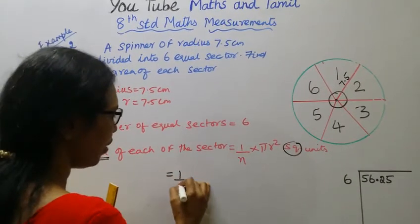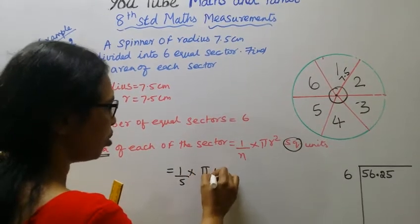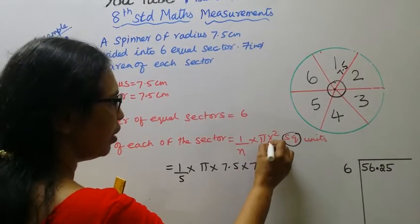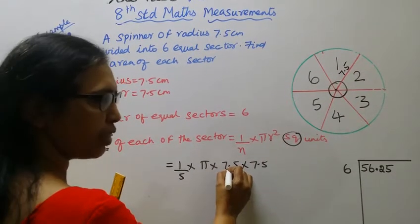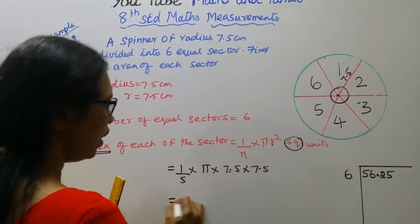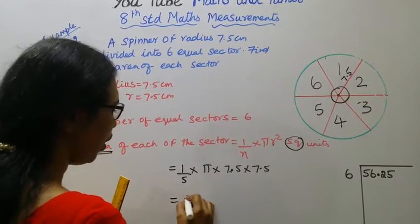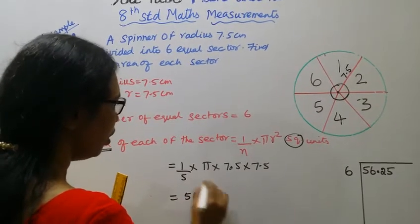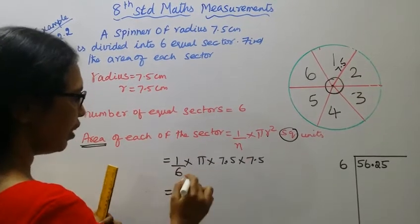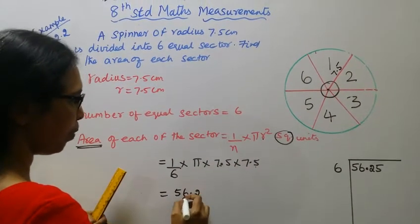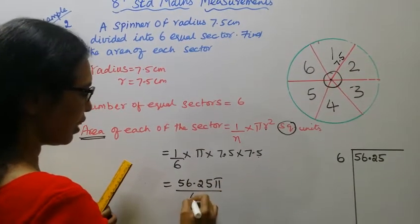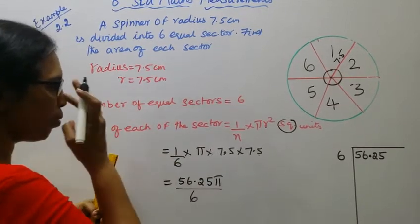1 by 6 into pi into 7.5 into 7.5. R square is 7.5 square, 7.5 into 7.5 is 56.25. Now 56.25 divide by 6.